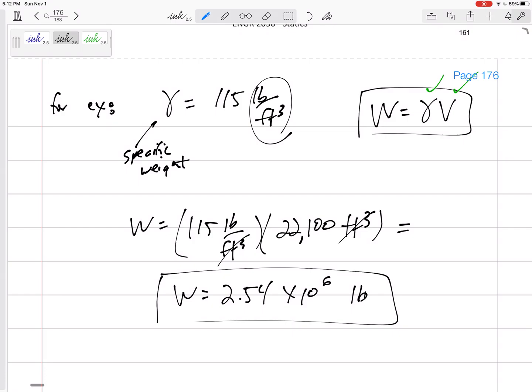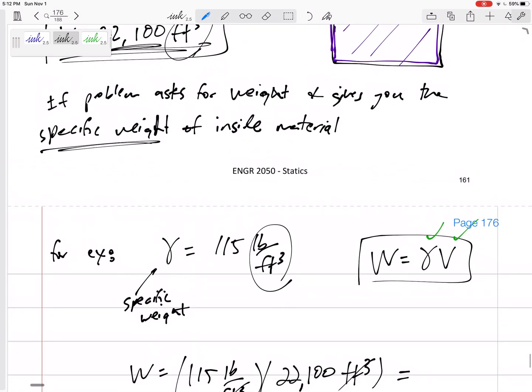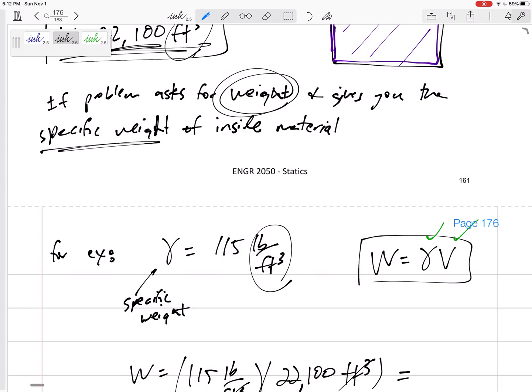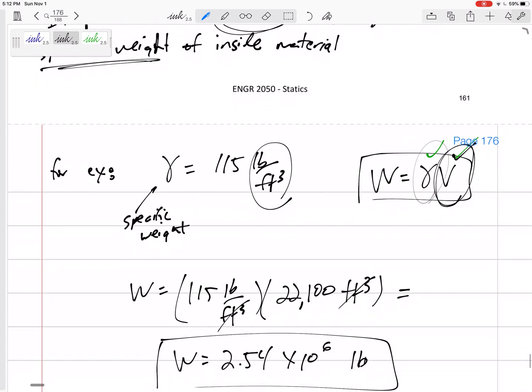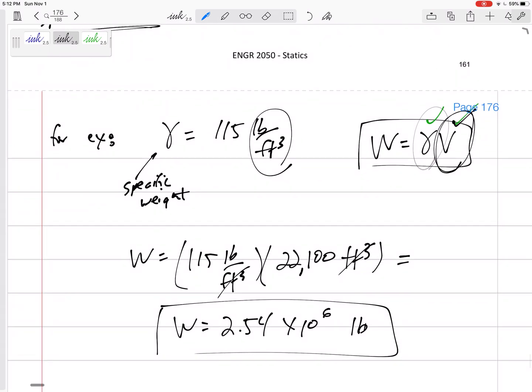So sometimes the problem isn't asking for the volume. Sometimes the problem is asking for the weight, but first you need to get the volume. Multiply times the specific weight to get the weight. You know, you might see a problem and say, why is this asking for the weight? The theorem of Pappus and Guldinus doesn't give us the weight. No, it gives us the volume. Then we take that volume, multiply times the specific weight, and that gives us the weight.